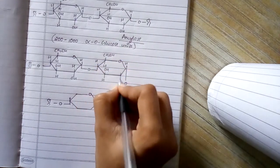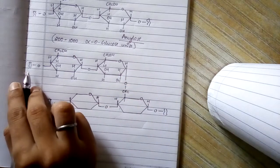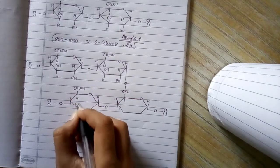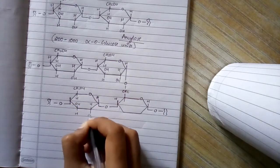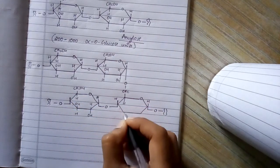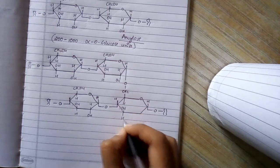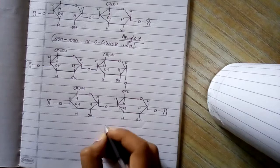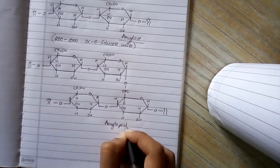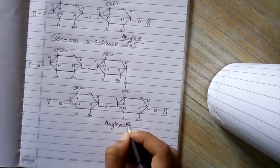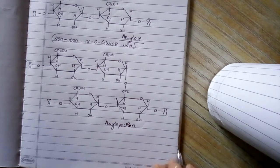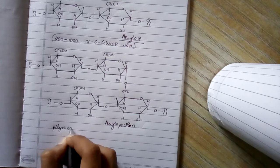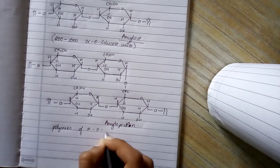The other things are similar. It multiplies over here. This is our amylopectin. Amylopectin is basically polymer of alpha D glucose units.